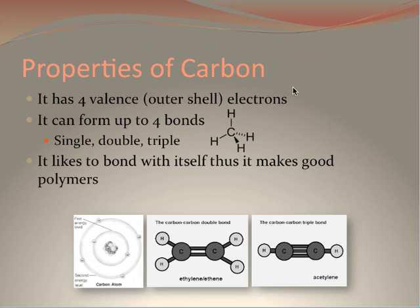Carbon in general has four valence outer shell electrons. It can form up to a maximum of four bonds. The type of bonds that carbon can form are single, double, and triple bonds.